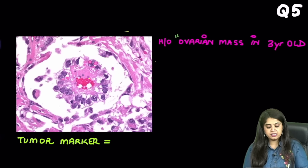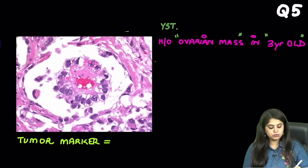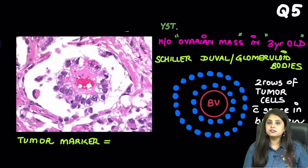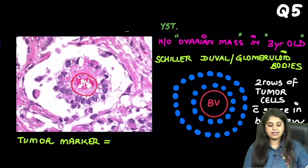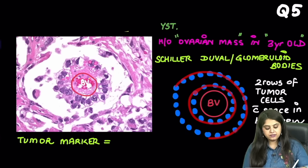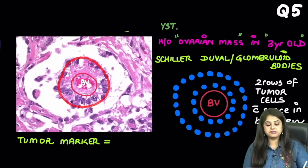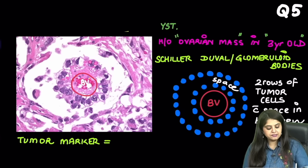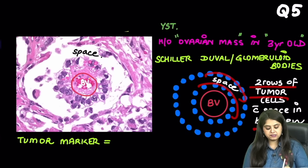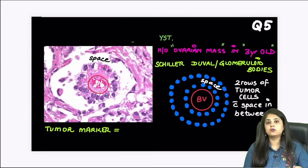Moving on to question 5: an ovarian mass in a very young child, a three-year-old. With that age, this can only be a yolk sac tumour. The body shown here is a Schiller-Duval body, also known as a glomeruloid body because it looks like a glomerulus. A glomerulus always has a blood vessel in the centre, and this also has a reddish-looking blood vessel in the centre. You can see one row of tumour cells, then another row of tumour cells, separated by a space in between — the whitish colour spaces visible here. So: a blood vessel in the centre, two rows of tumour cells, separated by a space — that is the Schiller-Duval or glomeruloid body seen in yolk sac tumour.